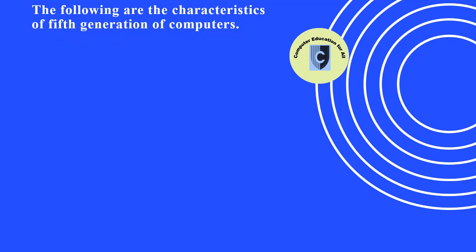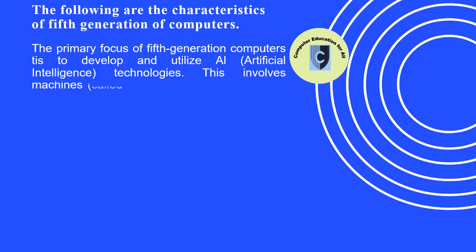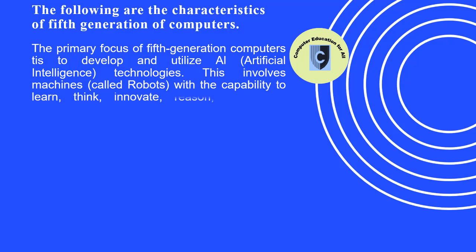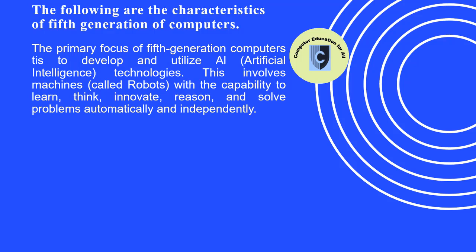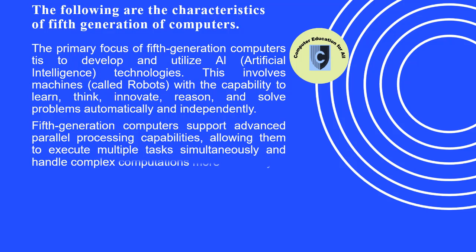The primary focus of fifth generation computers is to develop and utilize artificial intelligence (AI) technologies. This involves machines — called robots — with the capability to learn, think, innovate, reason, and solve problems automatically and independently. Fifth generation computers also support advanced parallel processing capabilities, allowing them to execute multiple tasks simultaneously and handle complex computations more efficiently.